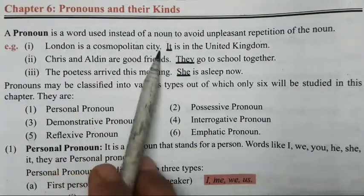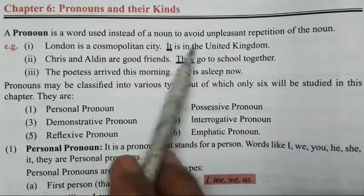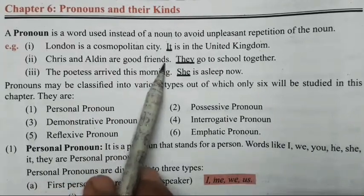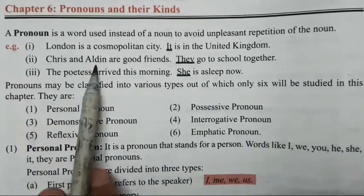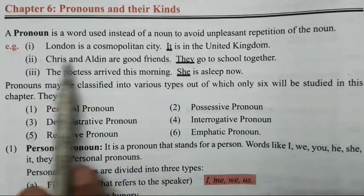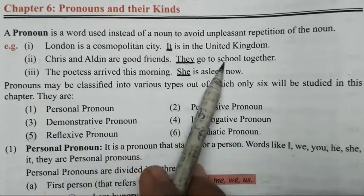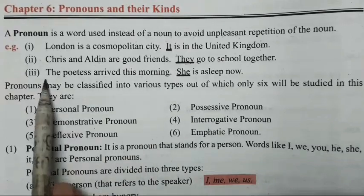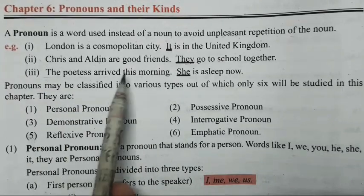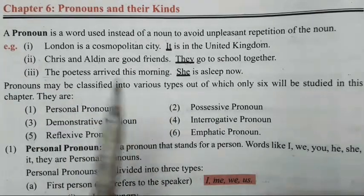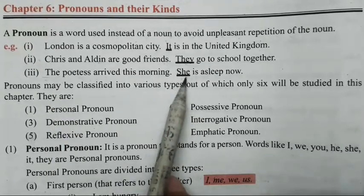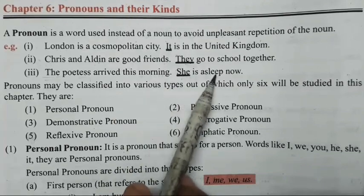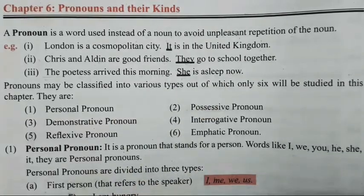London is a cosmopolitan city — it is in the United Kingdom. Chris and Adeline are good friends. Chris and Adeline ke jagah pe 'they' use hua because they are two members — so they go to school together. The poetess arrived this morning. Poetess ke jagah pe 'she' ho ga — poet hota toh 'he' hota. She is asleep now.